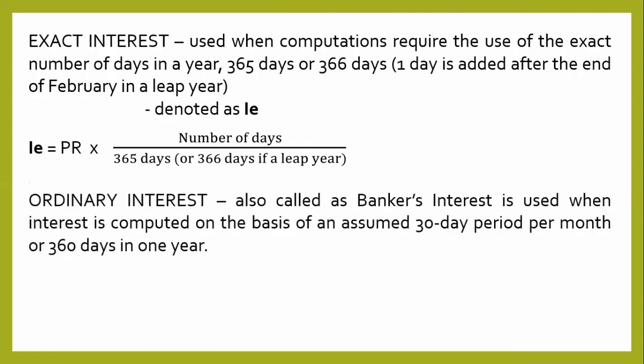When we say ordinary interest, also called banker's interest, it is used when interest is computed on the basis of an assumed 30-day period per month, or 360 days in one year. Ordinary interest is denoted as IO. The formula is: IO is equal to P times R times the given number of days, divided by 360.